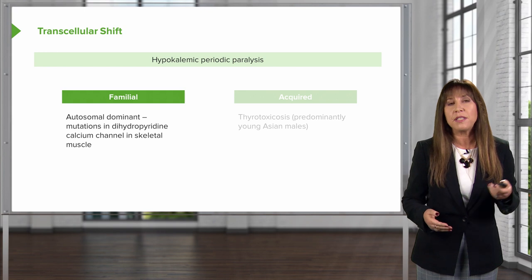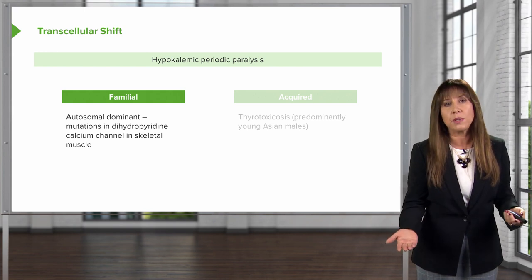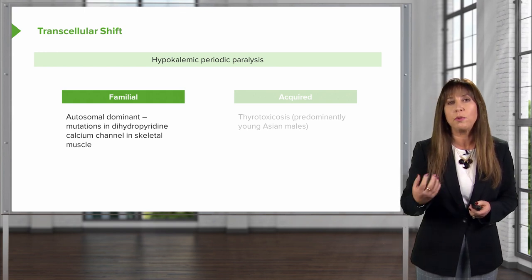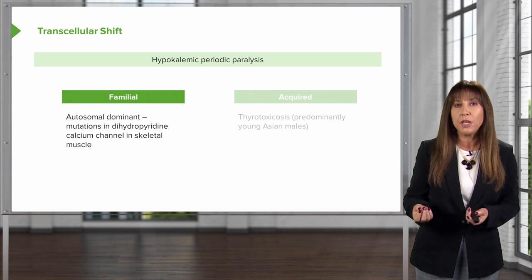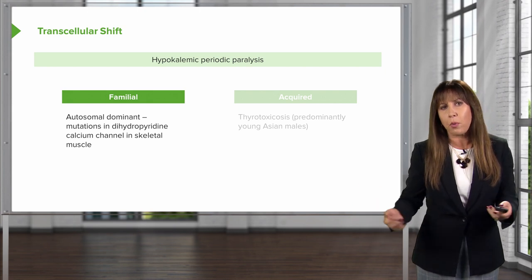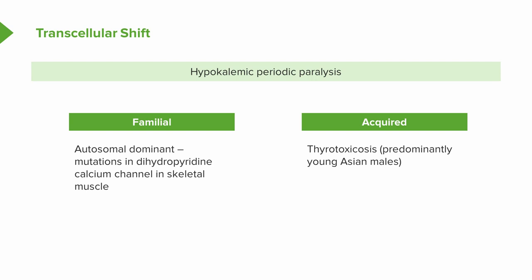This can be due to familial reasons — it's an autosomal dominant disorder with mutations in the dihydropyridine calcium channel in skeletal muscle. It's actually quite rare. A bit more common is the acquired form, which is typically associated with thyrotoxicosis.